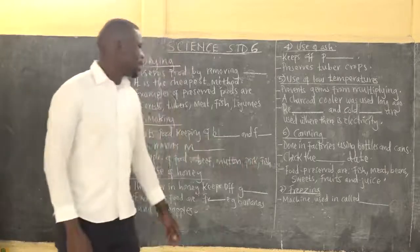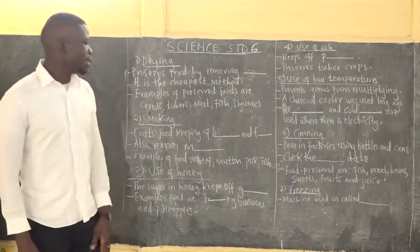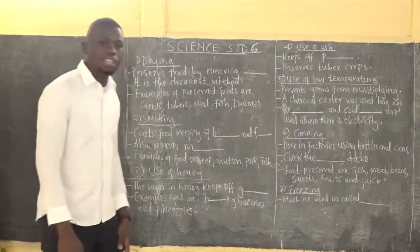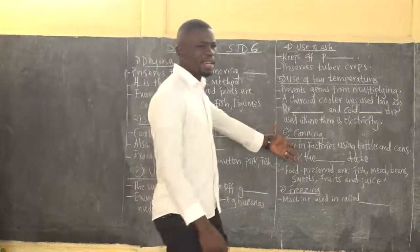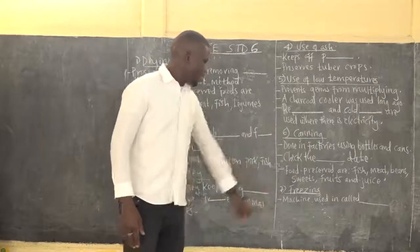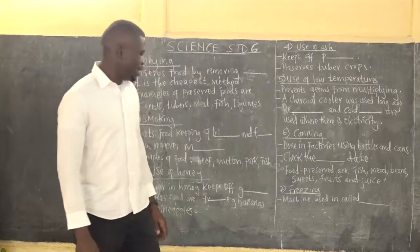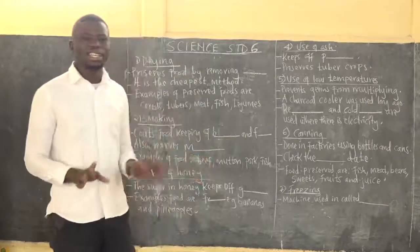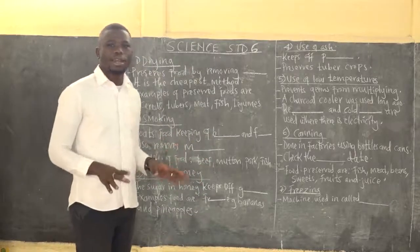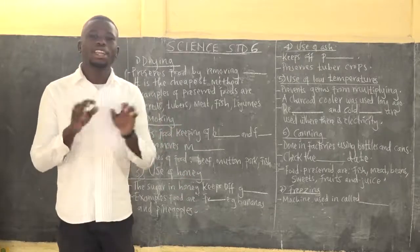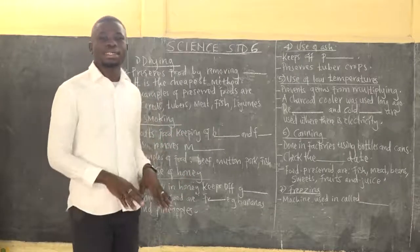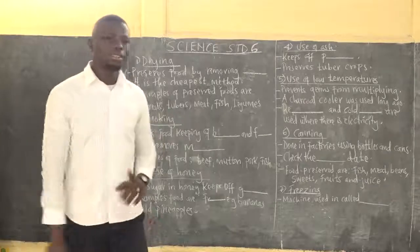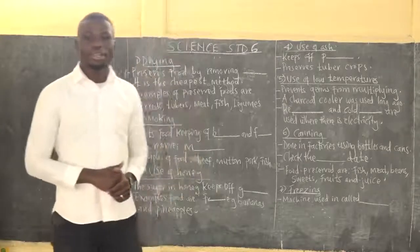Foods preserved by canning include fish, meat, beans, sweets, fruits, and juice. Canned food is mostly used by the military. The last method is freezing, where we use a freezer — a machine that needs electricity to work. When food is put in a deep freezer, it is able to last for a long time. Thank you so much; this has been our lesson.